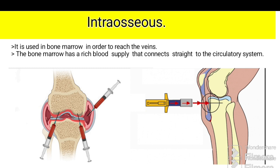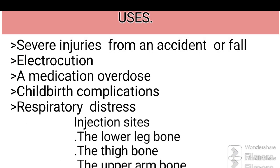Intraosseous injection is used to reach the bone marrow, which has a rich blood supply that connects it to the circulatory system. Healthcare professionals typically reserve intraosseous injection for emergencies as it is the quickest way to give fluids, drugs, and blood products to patients. It is used in severe injuries from an accident or fall, electrocution, medication overdose, childbirth complications, and respiratory distress. Injection sites are the lower leg bone, the thigh bone, and the upper arm bone.